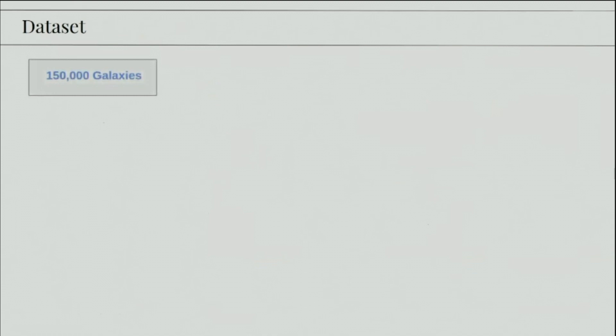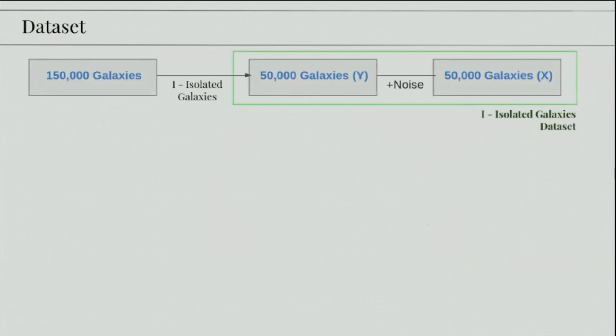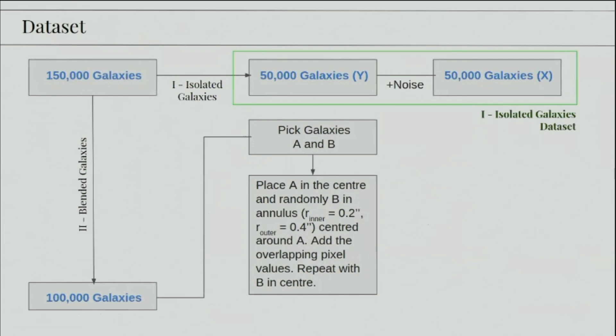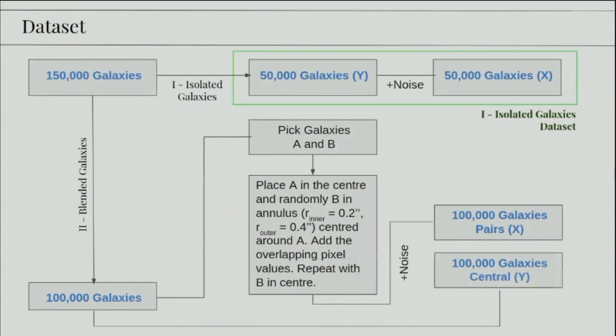We ended up having something like 250,000 galaxies. So from those, we select a subset of 150,000 galaxies. And these were split into two. So for the first variational autoencoder that works on isolated galaxies, we selected 50,000. And adding noise becomes our input, and this in total is our whole dataset. The rest 100,000 galaxies were used for blended sources. This blending is done by picking two different galaxies randomly. And the first one is placed in the center, and the second one in an annulus around the first one. And then the pixels are added so as to emulate blending. And the output of this is the original central galaxy without blending.